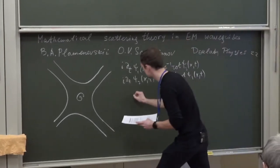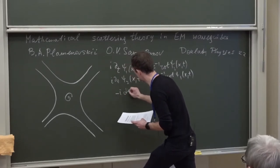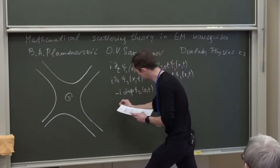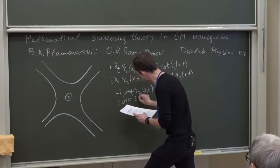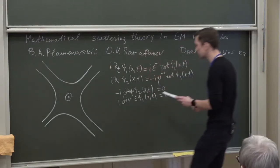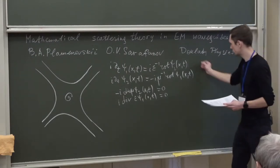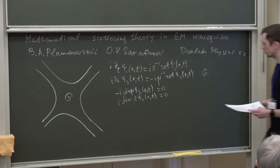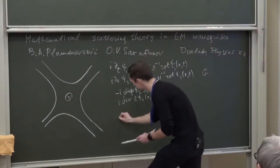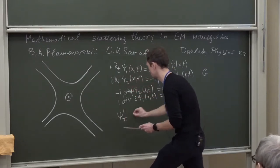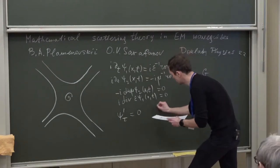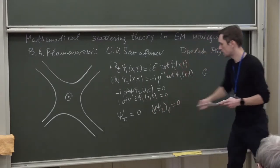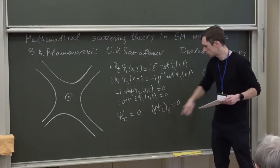The Maxwell system has two divergence equations: divergence of mu Psi2 of x,t equals zero, and divergence of epsilon Psi1 of x,t equals zero. These equations hold in domain G, where T is time. On the boundary we have boundary conditions: the tangent component of the vector Psi1 is equal to zero, and the normal component of the vector mu Psi2 is equal to zero on the boundary.